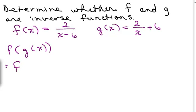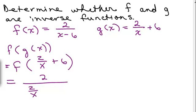So this would be f of, well, g of x is 2 over x plus 6. And now we're going to plug 2 over x plus 6 into this function for f. So we have 2 over, and then in place of this x here, we have to put 2 over x plus 6, right? And then we're subtracting 6.